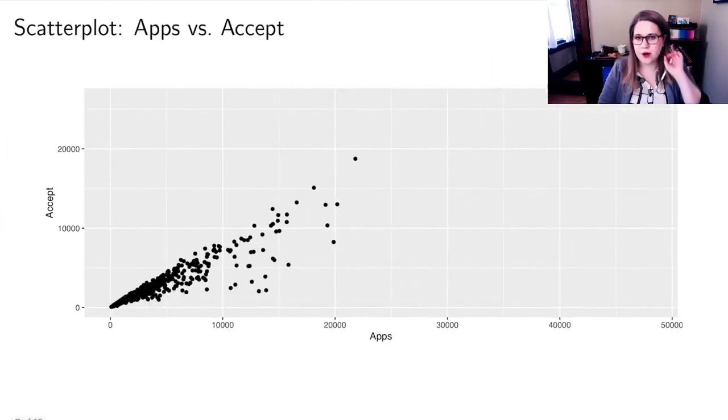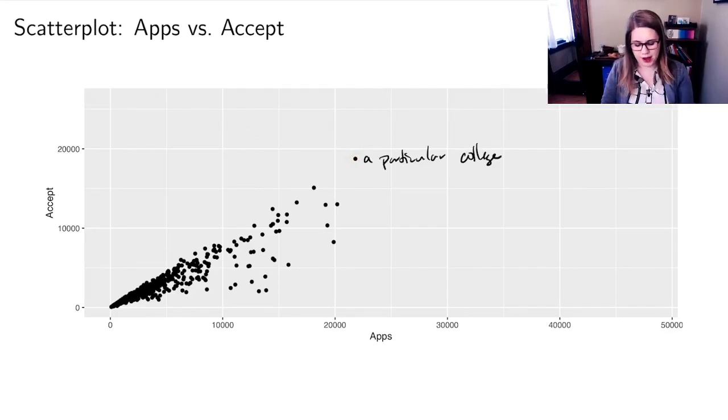Here's a scatterplot, the data visualization type for two quantitative variables. We have one variable on the x-axis and one on the y-axis. Just like with a dot plot, one dot means one observation. So this is a particular college. Then we can look at the strength and direction of the association.